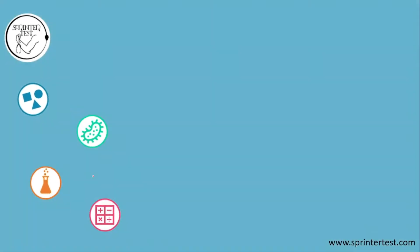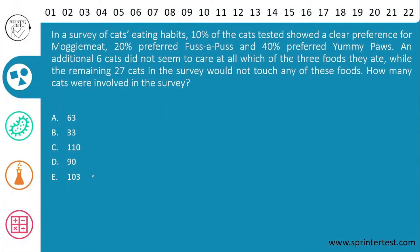Let's start with question number 6. In a survey of cats' eating habits, 10% of the cats tested showed a clear preference for moji meat, 20% preferred fuzz-a-pus, and 40% preferred yummy paws. An additional 6 cats did not seem to care at all which of the 3 foods they ate, while the remaining 27 cats in the survey would not touch any of these foods. How many cats were involved in the survey?